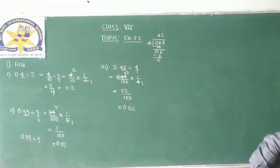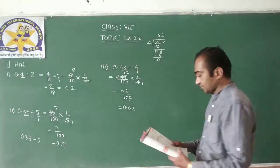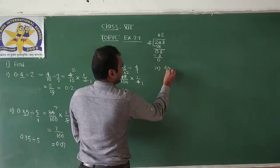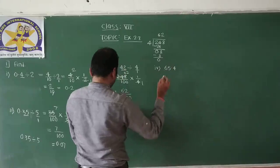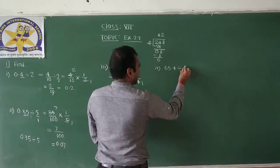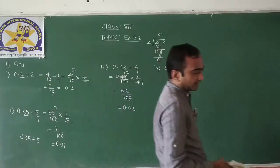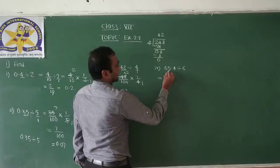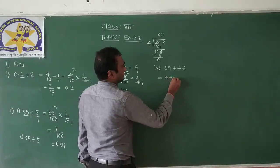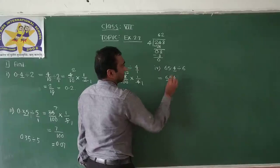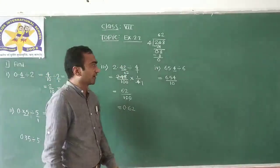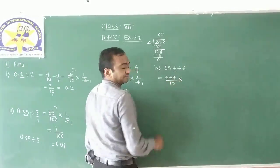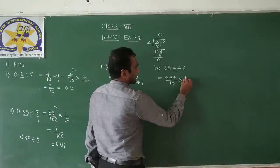Now the fourth question. The fourth question is 65.4 divided by 6. Since after 1 digit there is a decimal point, we write 654 divided by 10. Convert division into multiplication. The reciprocal of 6 by 1 is 1 by 6.